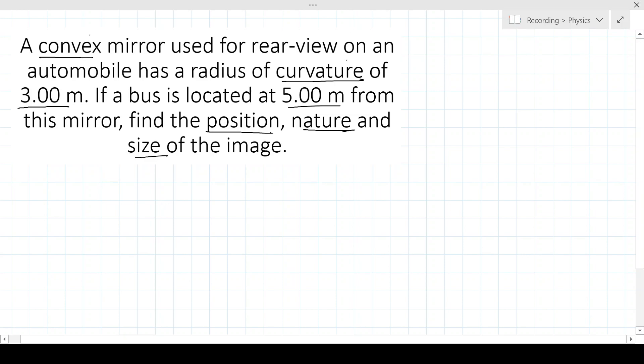So let's get started. The radius of curvature is given to be 3 meters and we know that a convex mirror always has positive radius of curvature. That gives us focal length equal to radius by 2, that is 1.5 meters.